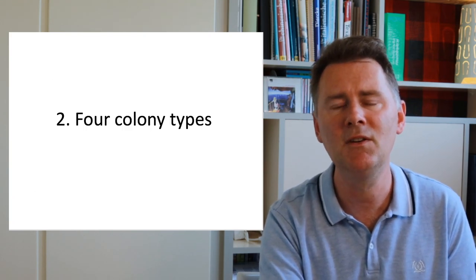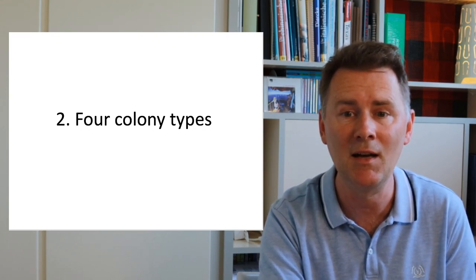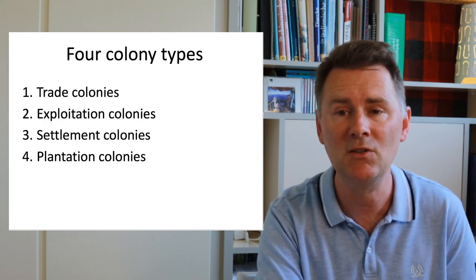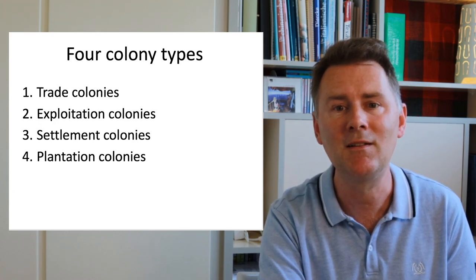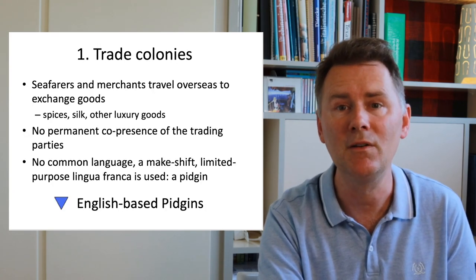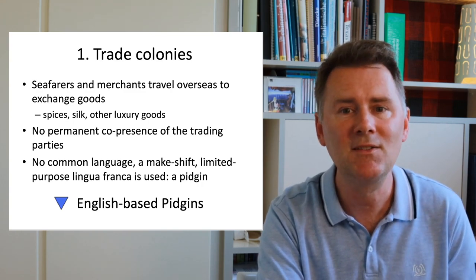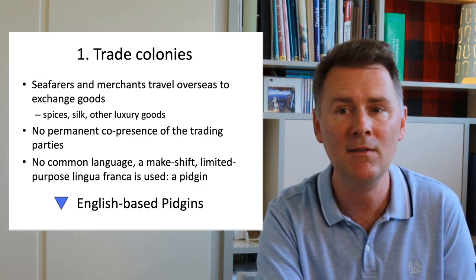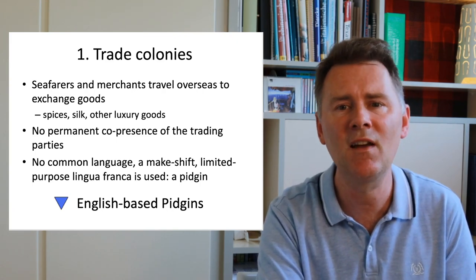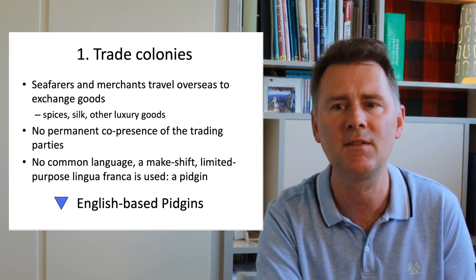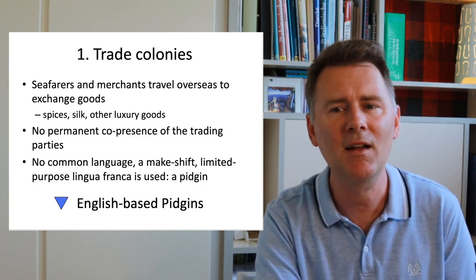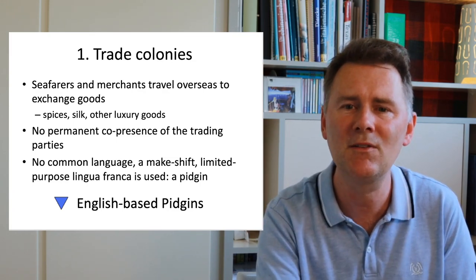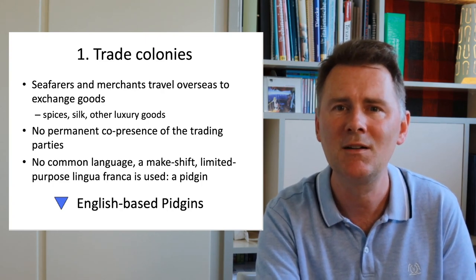I want to come to the second part of this video, in which I go over four different colony types and their linguistic consequences. The colonies are trade colonies, exploitation colonies, settlement colonies, and plantation colonies. Trade colonies, as the name implies, were set up for the purpose of exchanging goods. Trade colonies represent the start of the colonial enterprise and initially were established without a permanent co-presence of the trading parties, meaning the traders don't share a common language but have a need to communicate — and this results in a limited-purpose lingua franca or pidgin.